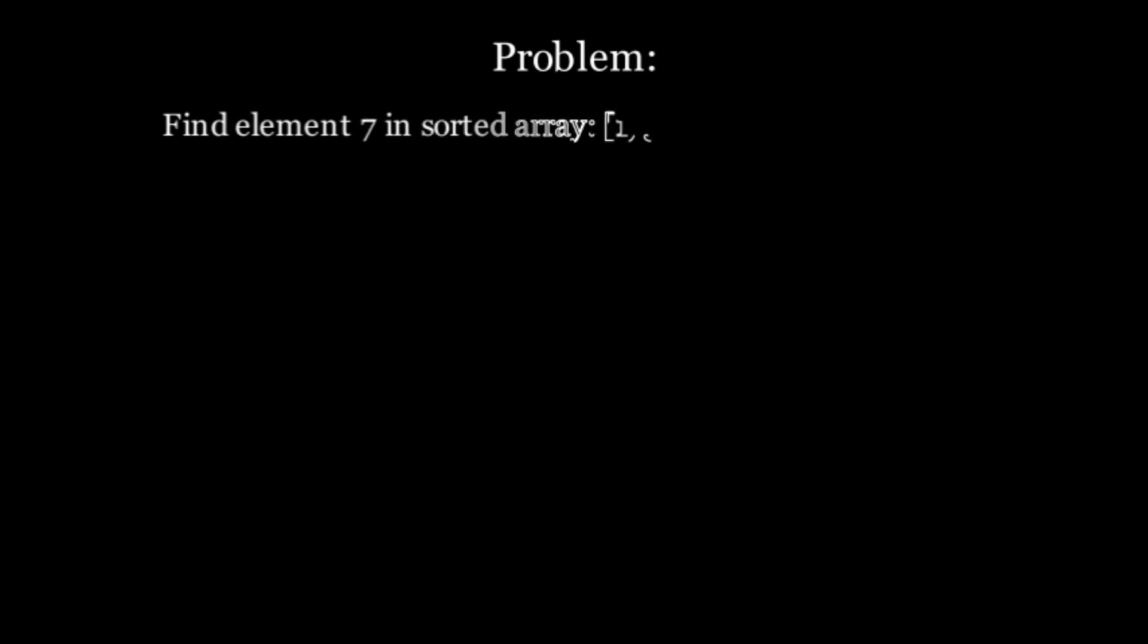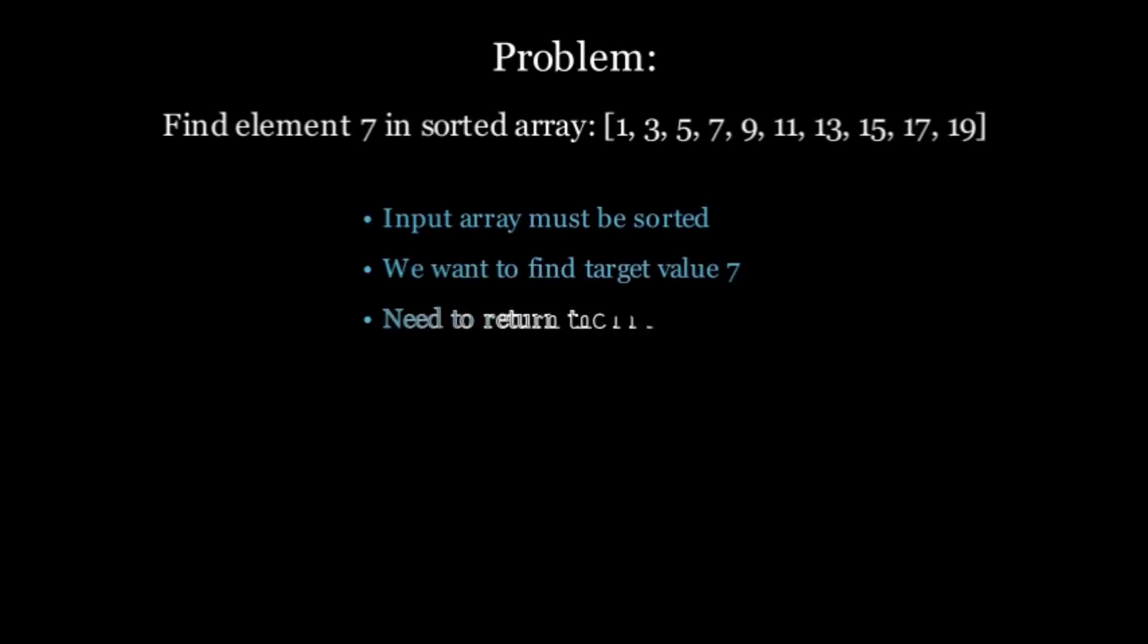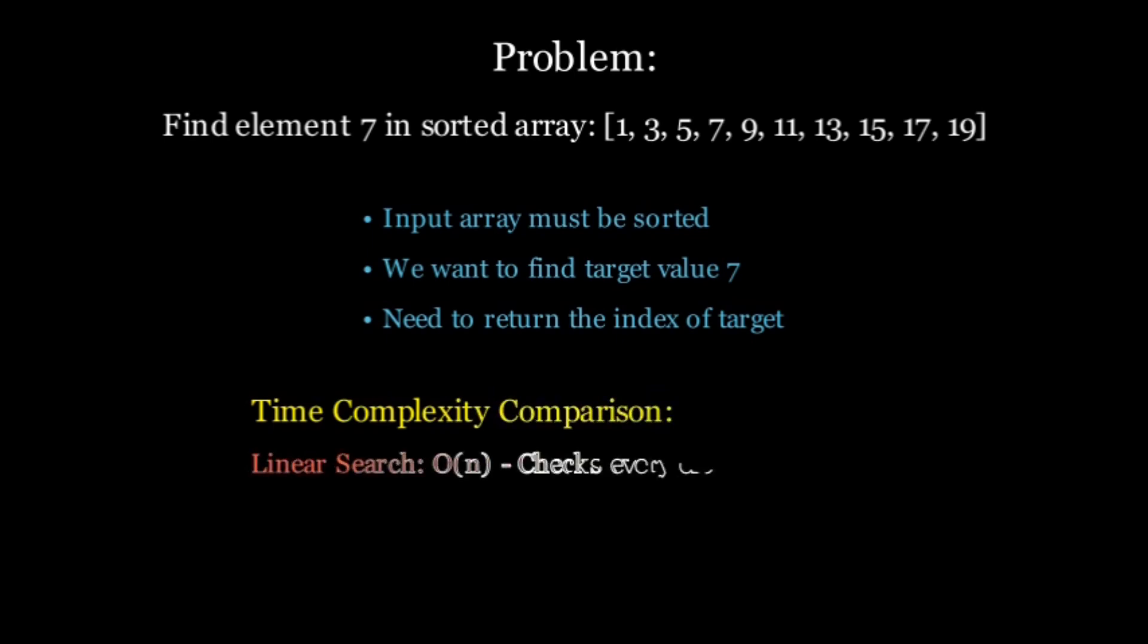Alright so let's start with the problem. Imagine you have a sorted array of numbers. Our mission is to find the number 7 in this array. So now you might think why not just check every number one by one. Well, that's called the linear search. And while it works, it's not the most efficient. If the array had one million numbers, you would be checking one million times with O(n) complexity. But with binary search, you can find the number in just a few steps by dividing the array in half and eliminating half of the remaining elements with each step.